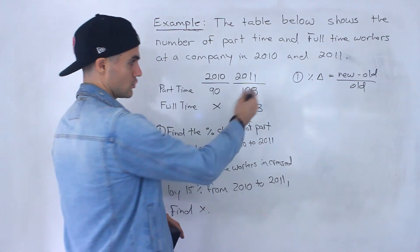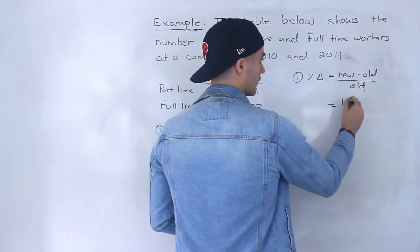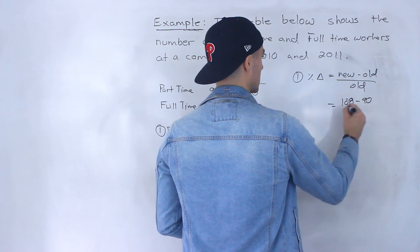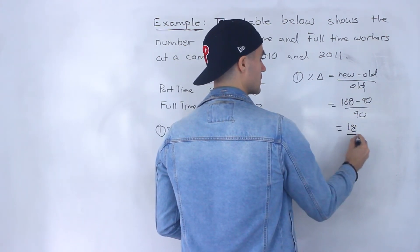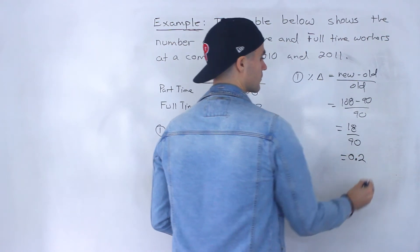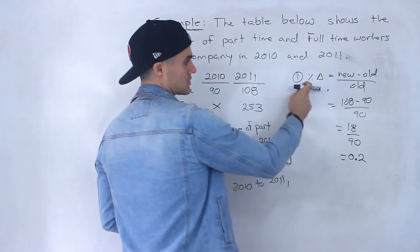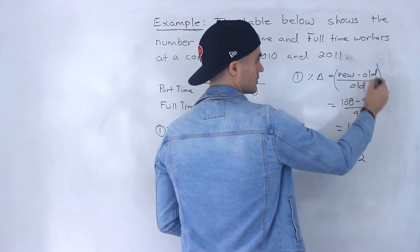So it's going to be, the new value is 108 minus 90 over 90. This would be 18 over 90, that gives us 0.2.